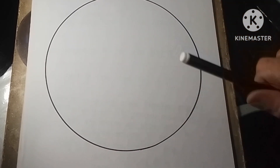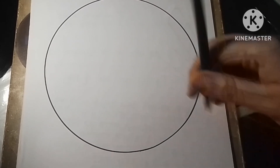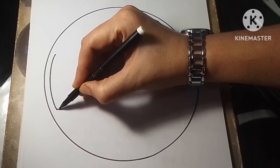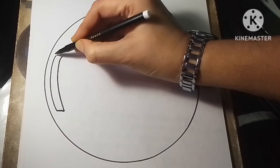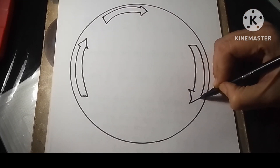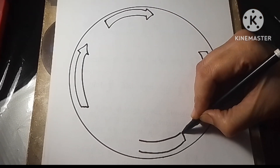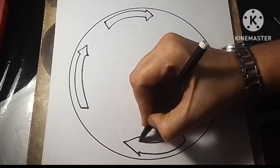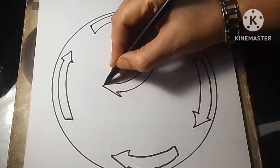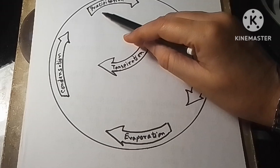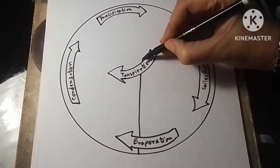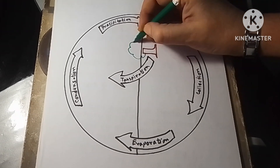If you want an easier diagram of the water cycle, here is a simpler one for you. Just draw a circle and then draw four arrows at the four corners and at the middle of the circle. Now write down the steps — condensation, precipitation, transpiration, collection, and evaporation — inside the arrows. I am showing you in a very easy manner.